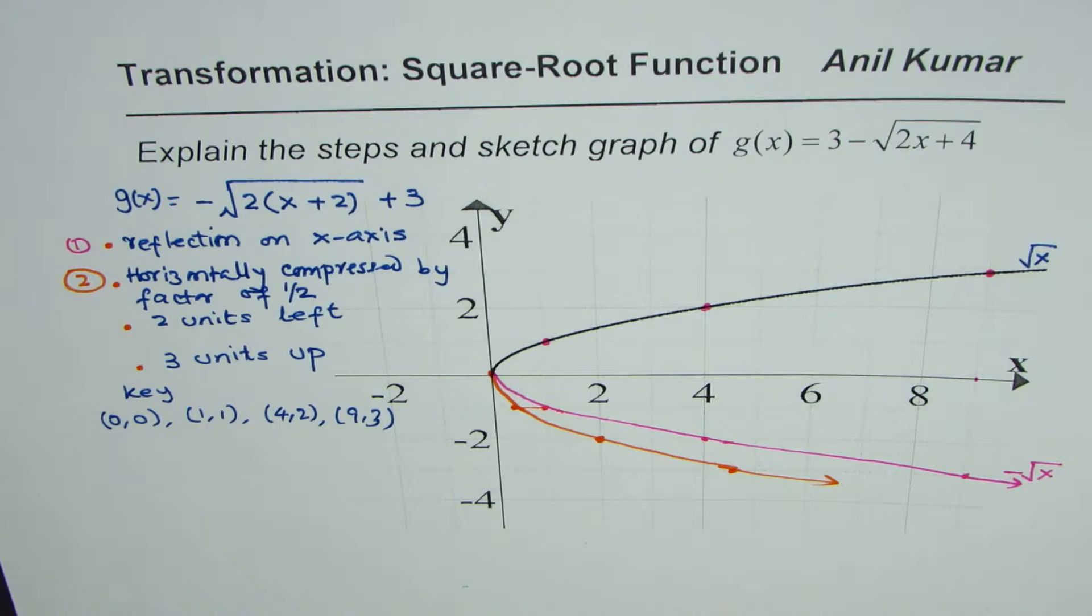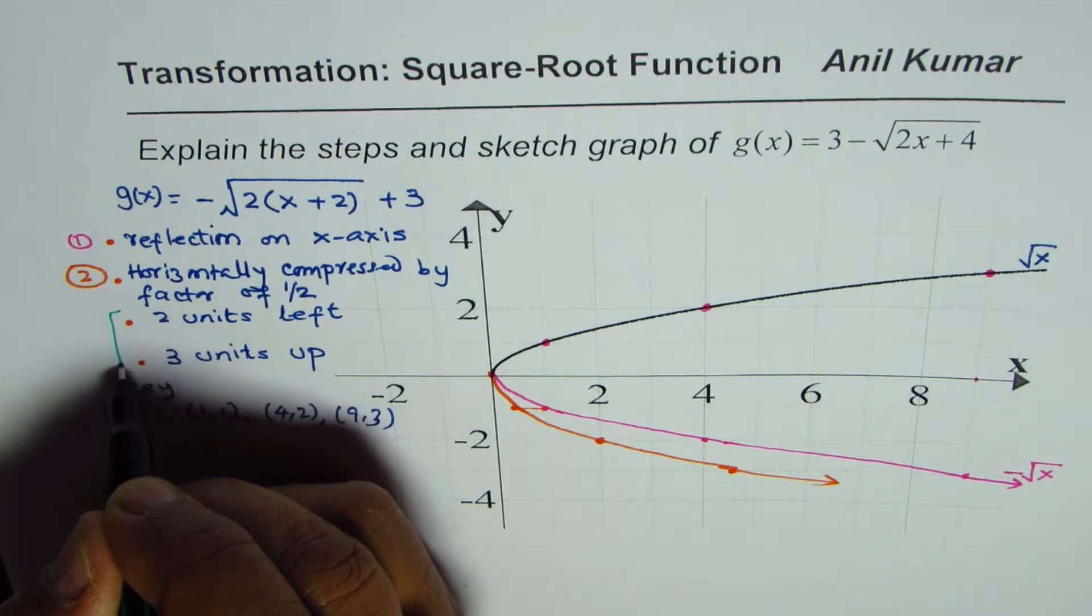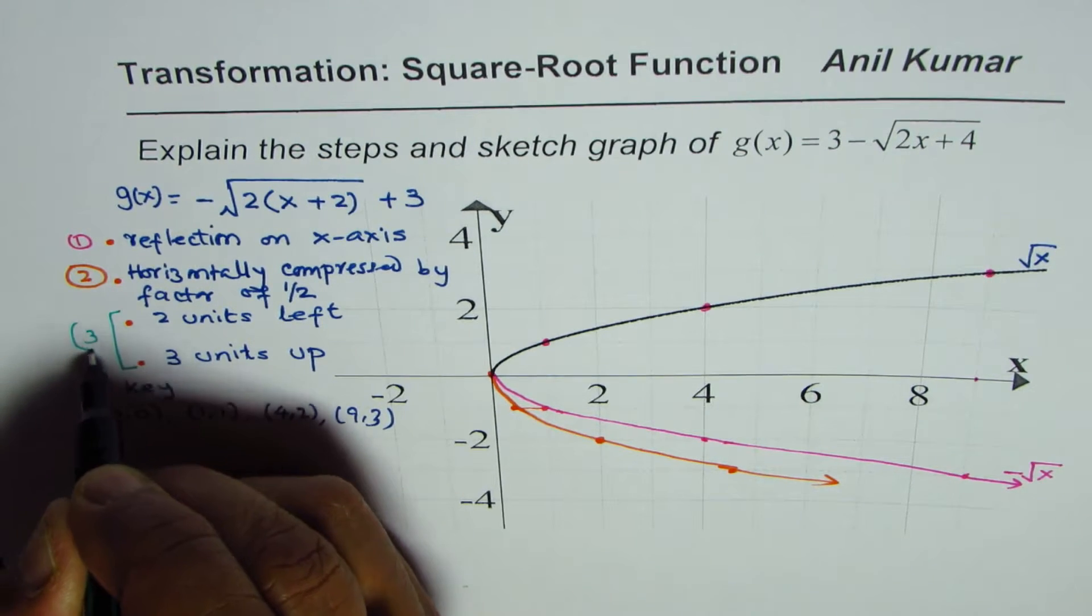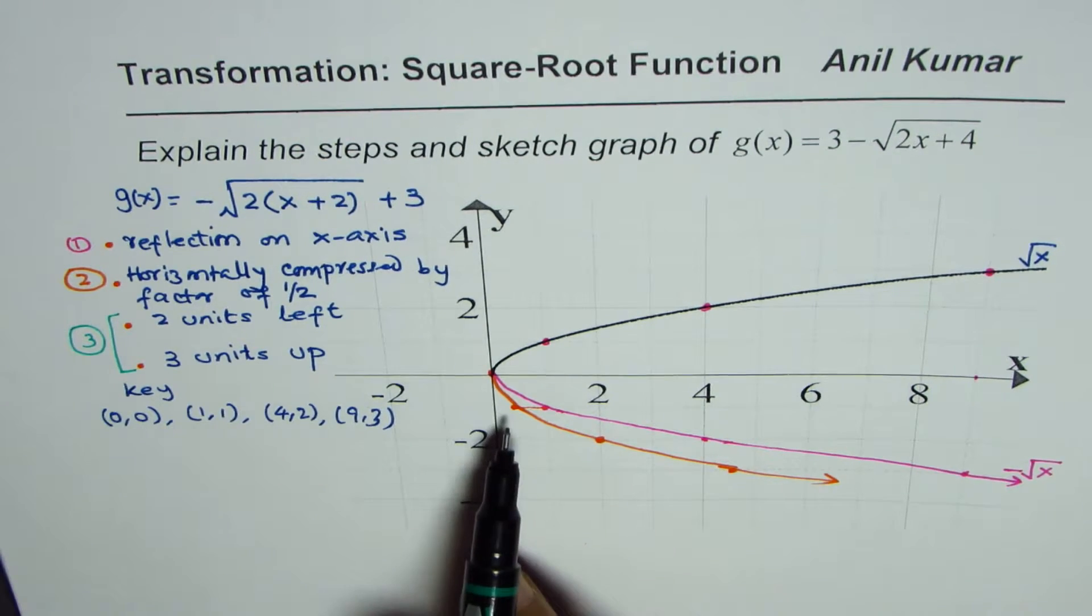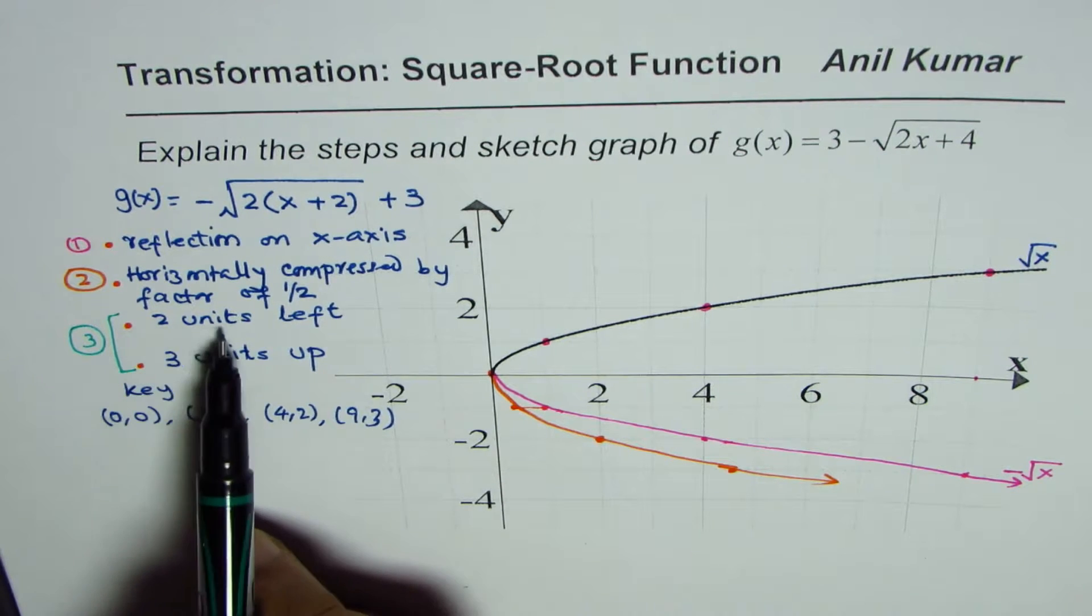And finally, let me sketch the function with translations. So normally we can combine these two. This will be our step number three. For each point we'll move two units left and three units up.